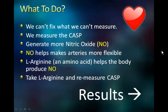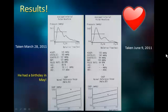We want the body to generate more nitric oxide, and what helps the body do that is L-Arginine, which is just an amino acid. So we give the person L-Arginine — specifically a product called L-Arginine Plus, which is a very inexpensive product for what it does. And then we re-measure.